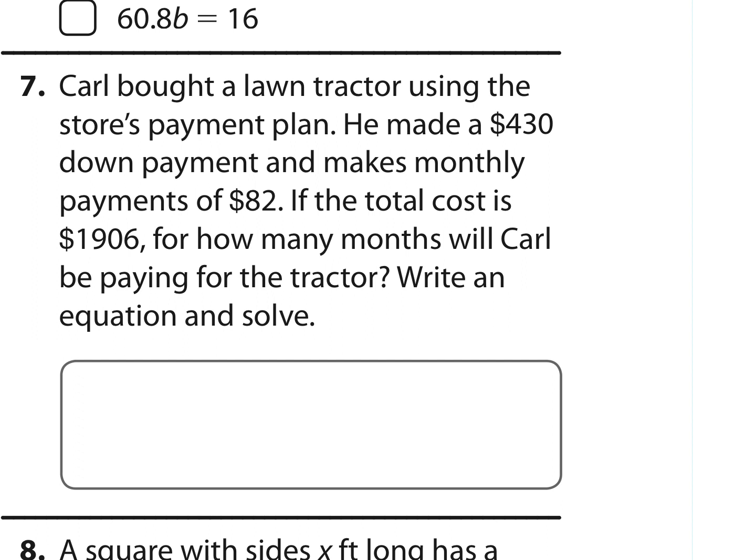Number 7. Carl bought a lawn tractor using the store's payment plan. He made a $430 down payment and makes monthly payments of $82. If the total cost is $1,906, for how many months will Carl be paying for the tractor? Write an equation and solve.